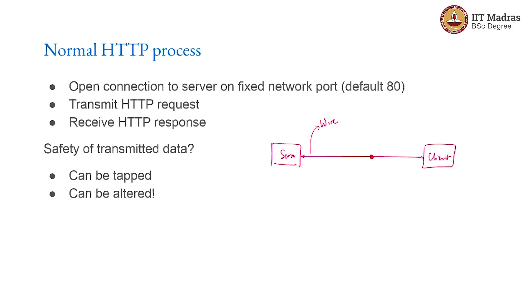I could potentially think of someone sitting out there who is an attacker. When I say an attacker, it is not someone coming to beat you up, but someone who is trying to get information about you that you do not want them to have. The attacker is basically sitting there and has somehow managed to tap into the wire. It could be your Wi-Fi access point — maybe you are in a coffee shop and you have connected to the local Wi-Fi access point without authentication.